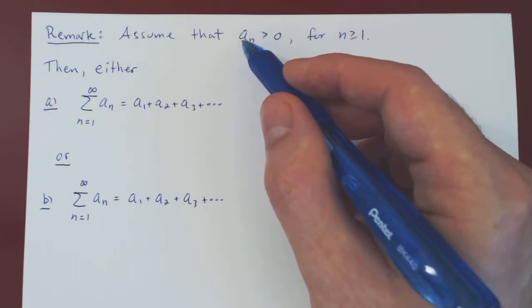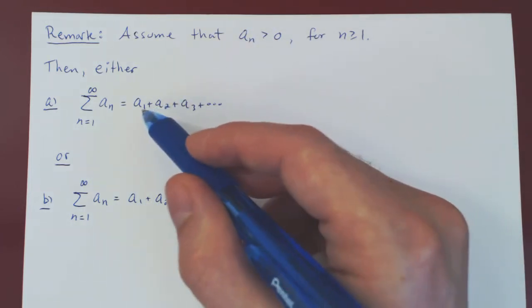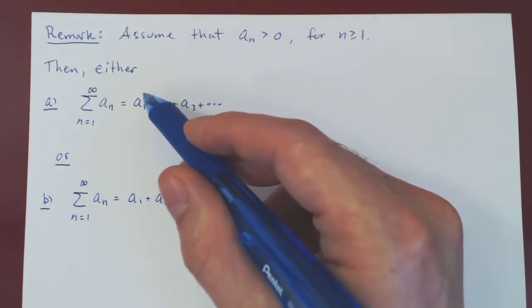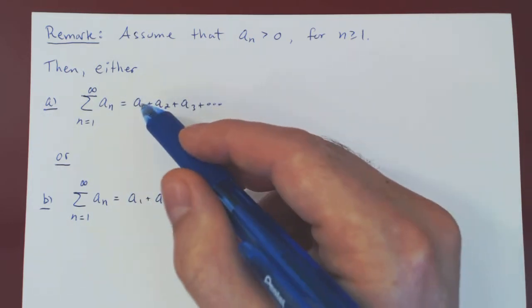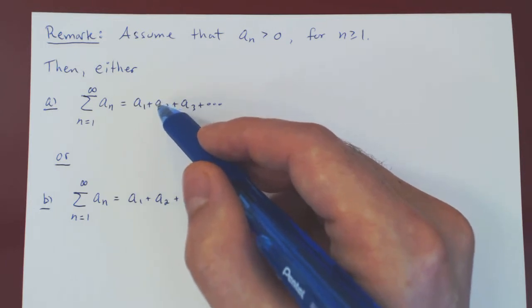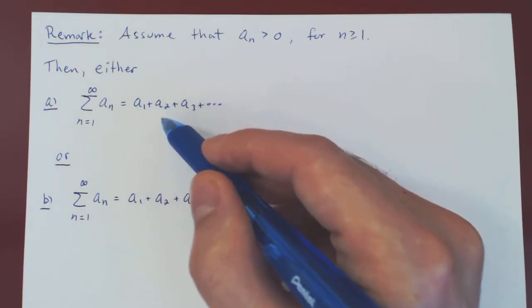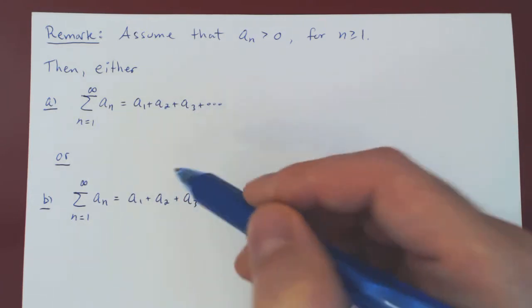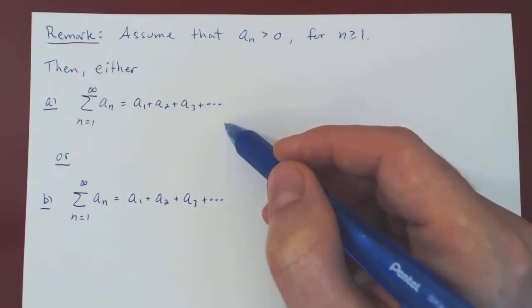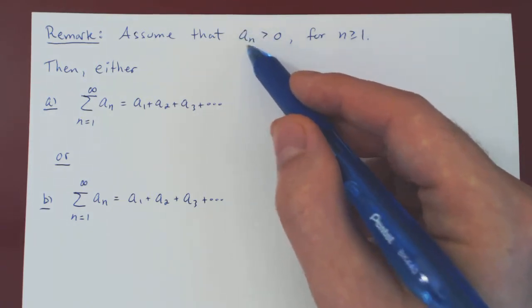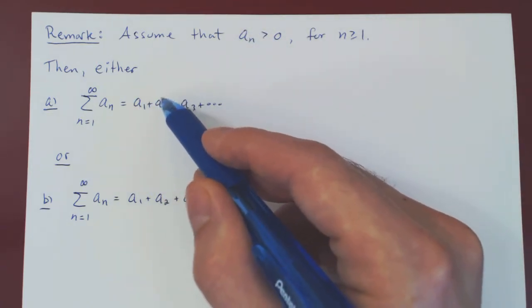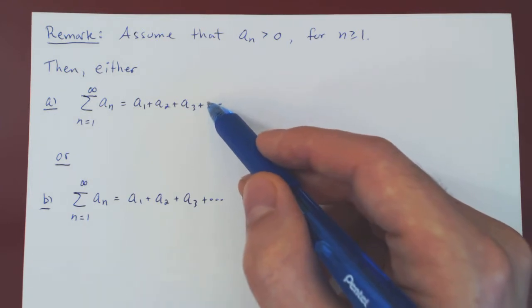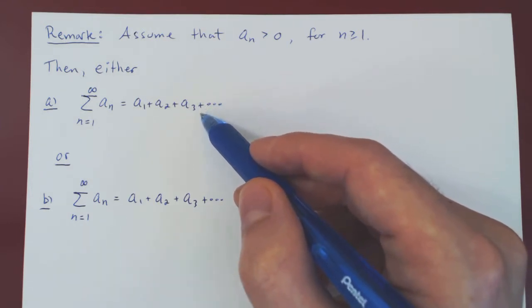The key point is that every term of our sequence is positive. So if you think of trying to evaluate, if possible, the series, well you would look at a1, then a1 plus a2, then a1 plus a2 plus a3, and a1 plus a2 plus a3 plus a4, and so on. So you look at your sequence of partial sums. But as every term is positive, as you keep adding more and more terms, the sequence of partial sums gets bigger and bigger, therefore it's increasing.